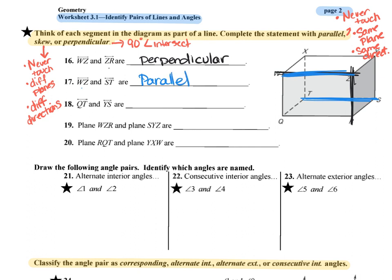I want you to finish the rest of those. Then we will jump down and look at questions 21, 22, and 23, where we draw the different angles that they ask about.